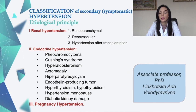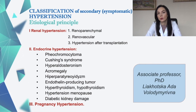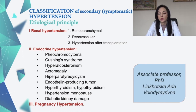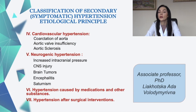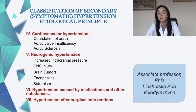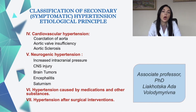Secondary hypertension classification by etiological principle: renal hypertension — renal parenchymal, renovascular, and post-transplantation; endocrine hypertension — pheochromocytoma, Cushing's syndrome, hyperaldosteronism, acromegaly, hyperparathyroidism, endothelin-producing tumor, hyperthyroidism, hypothyroidism, menopausal hypertension, diabetic kidney disease, and pregnancy hypertension; cardiovascular hypertension — coarctation of the aorta, aortic valve insufficiency, aortic sclerosis; neurogenic hypertension — increased intracranial pressure, CNS injury, brain tumors, encephalitis, and saturnism. Also included: hypertension caused by medications and other substances, and hypertension after surgical treatment.